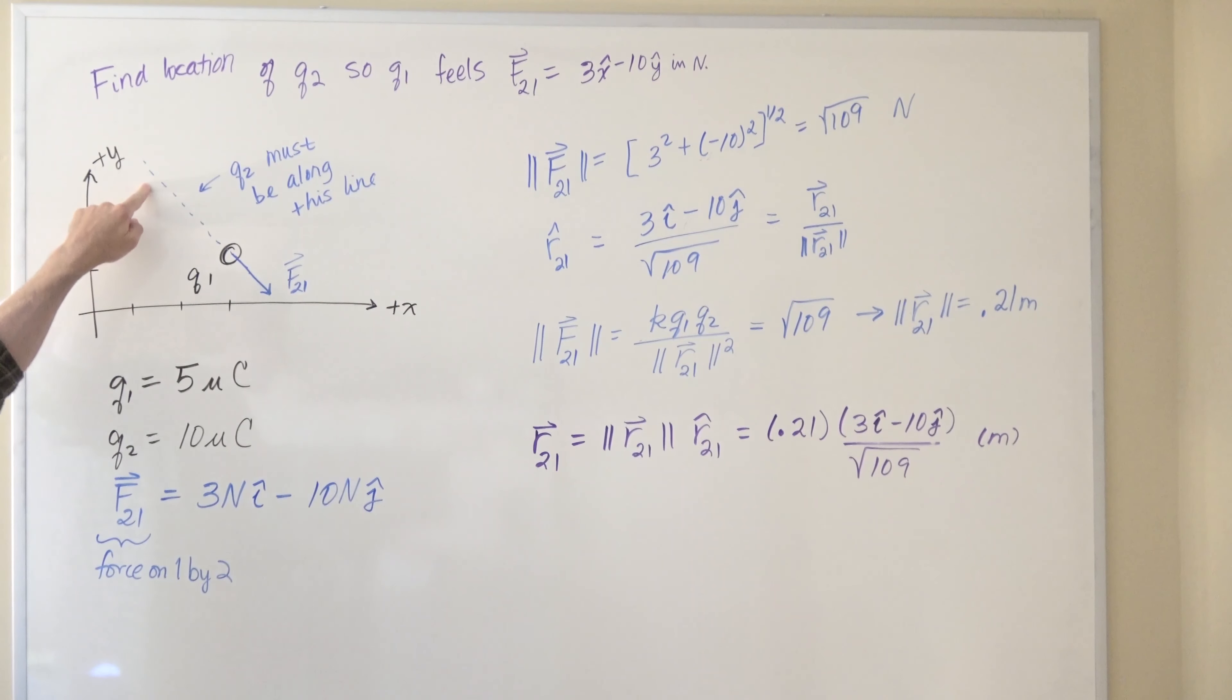So before we begin with any kind of mathematical analysis, first let's just think where in general should this charge be? Well if we draw our force F21 on q1, we know that these two charges have the same sign and therefore will repel one another. So if I want q1 to experience a force down and to the right like this, then q2 should lie somewhere up and to the left.